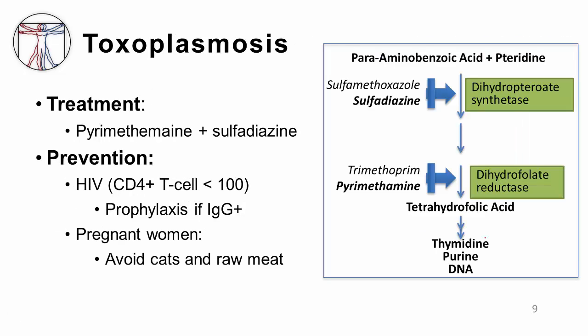In terms of treatment, pyrimethamine plus sulfadiazine are the standard of care. As shown in this image, both drugs are inhibitors of the thymidine pathway, which ultimately inhibits DNA synthesis. These drugs inhibit the same enzymes as trimethoprim and sulfamethoxazole, which are commonly used for bacterial, protozoal, or even fungal infections.